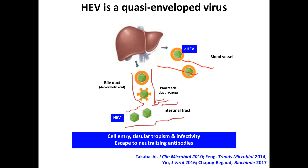An important characteristic of this virus is that it is a quasi-enveloped virus. It circulates in the blood with a lipid envelope, but when the virus reaches the bile, the envelope is destroyed by pancreatic enzymes and deoxycholic acid. So the virus found in the intestinal tract is naked. This envelope plays an important role in cell entry, tissue tropism, infectivity, and also allows the virus to escape neutralizing antibodies.